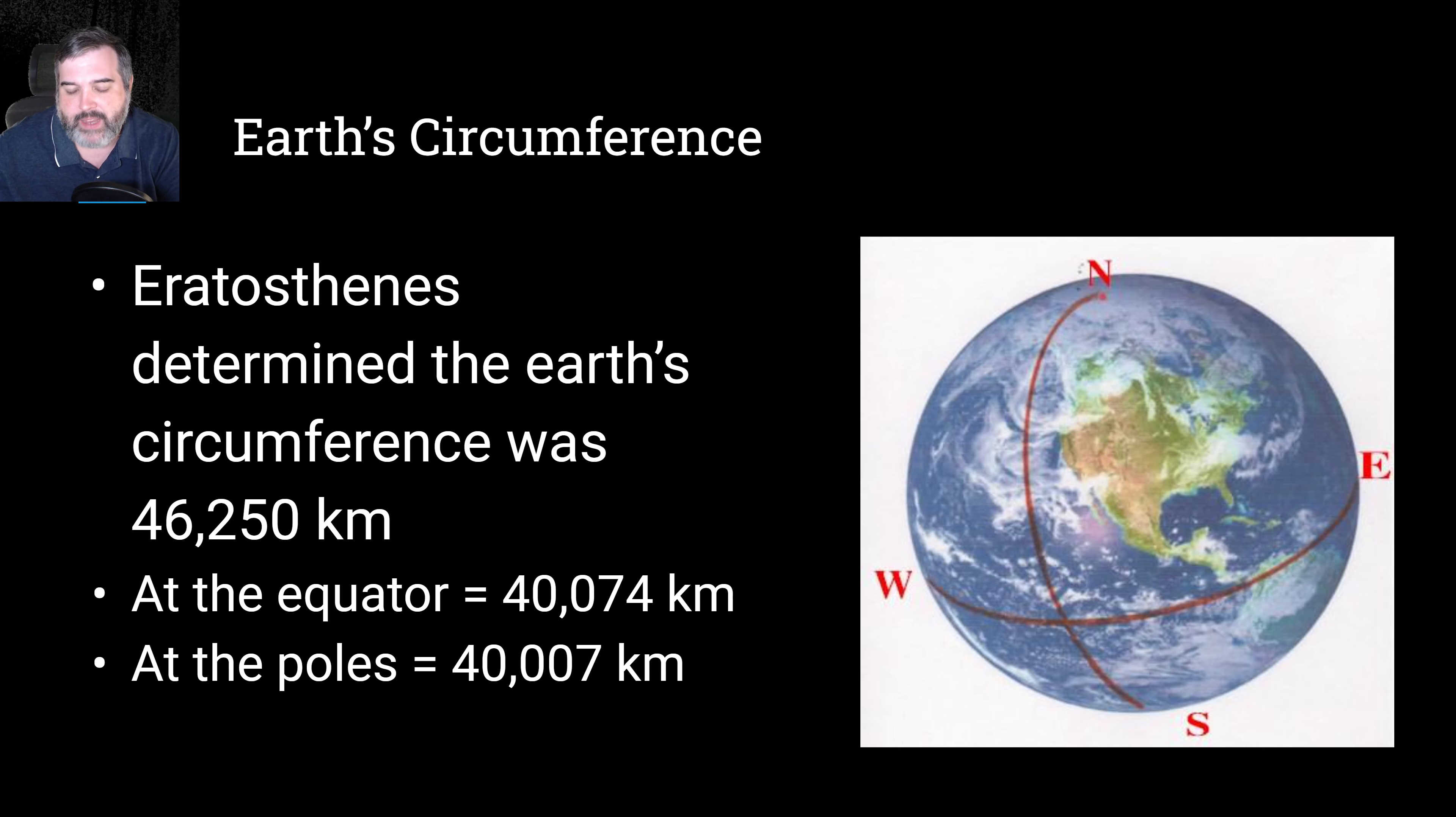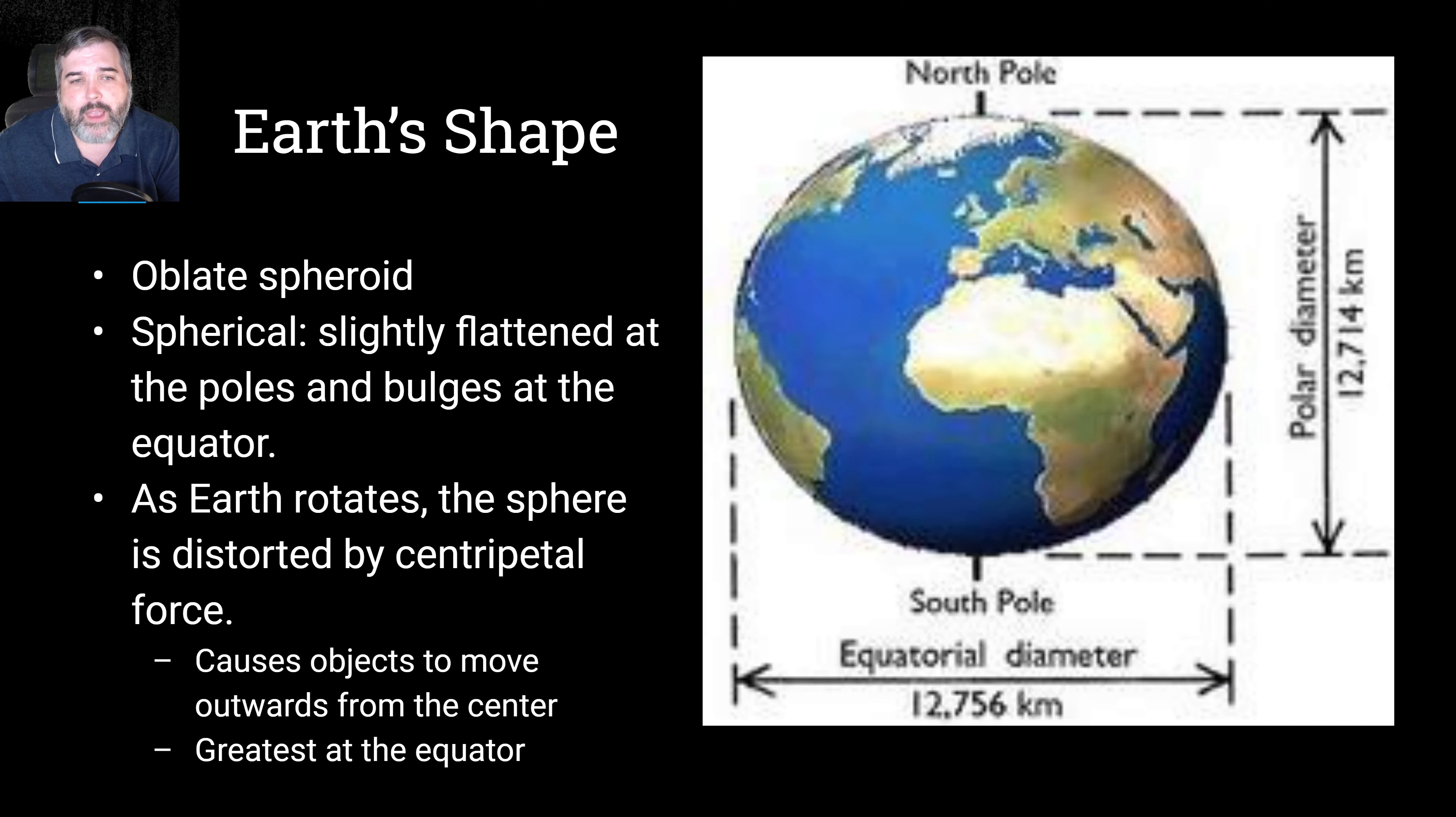At the poles, it bulges out about 40,007 kilometers is what we find. So it is an oblate spheroid. Spherical, it's slightly flattened at the poles. It bulges at the equator. So there it is. It's in your notes. Okay, I was a bit worried about that. So as Earth rotates, the sphere is distorted by centripetal force. So as the Earth spins, it's going to bulge out a little bit, causes objects to move outward from the center, and it's greatest at the equator. So again, just to kind of show you the distance, equatorial diameter is 12,756 kilometers, whereas the polar diameter is 12,714 kilometers. So this is not quite, it's longer this way than it is this way. Not by much, but by some.